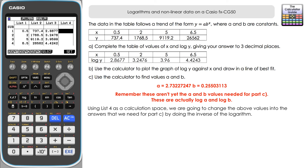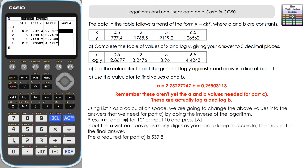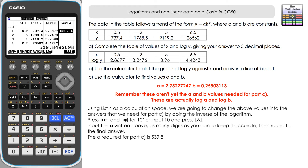We had log to base 10, so we need to compute 10 to the power of each value. Use Shift and the log button — the inverse function gives a little 10 — then enter the power. To find a, the power is that full value we had: 2.73227 and so on. Press Execute and we get approximately 539.849 — so our original a from the equation is about 539.8.